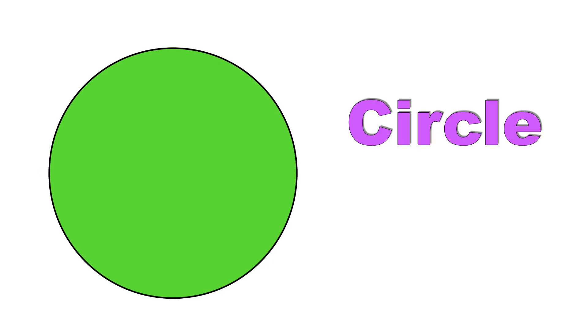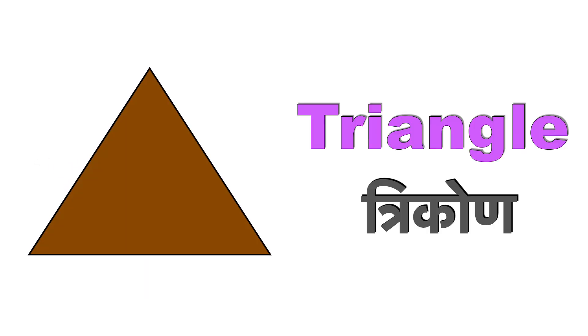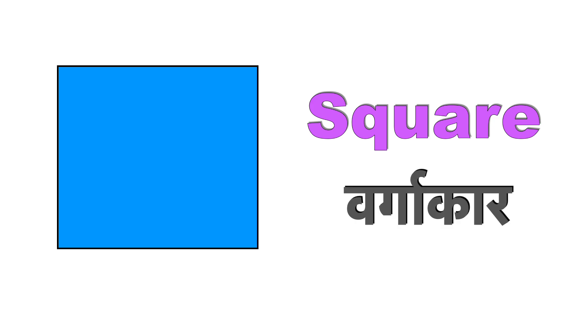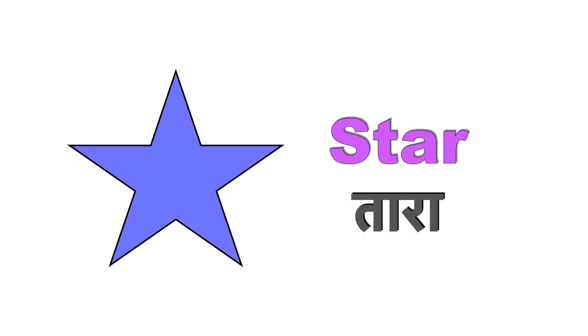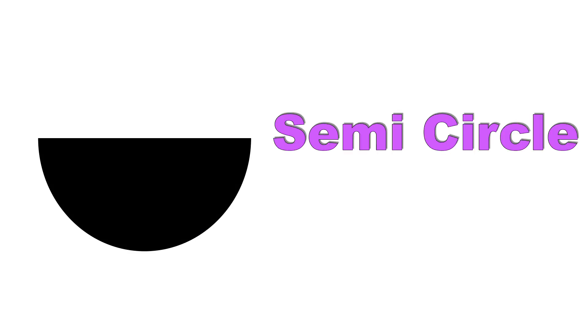Circle means Chakra. Triangle means Tricone. Square means Vargaakar. Rectangle means Ayat. Star means Tara. Semi Circle means Ardha Chakra.